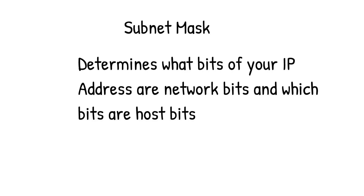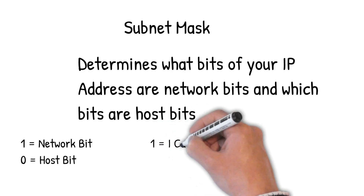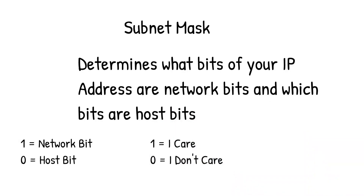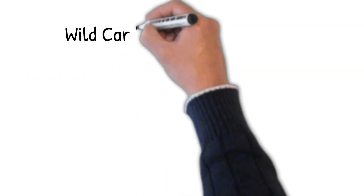With the subnet mask, the bits will either be a one or a zero. A one means the bit is a network bit, and a zero means the bit is a host bit. Since it's the network bits that matter, the ones in our mask are what we care about and the zeros we don't care about. If you're not sure how a subnet mask works, be sure to check out the tutorial on IPv4 addressing.